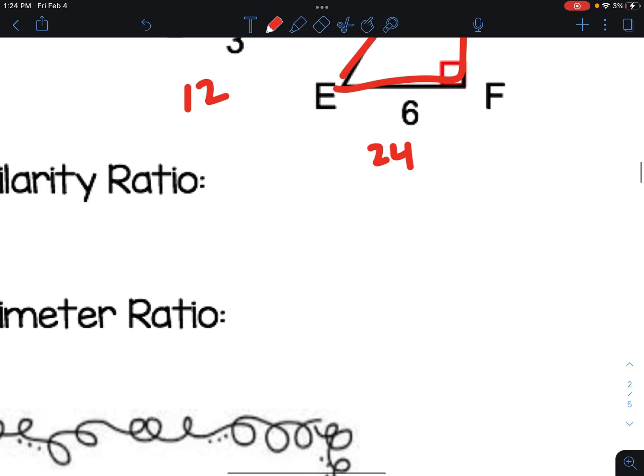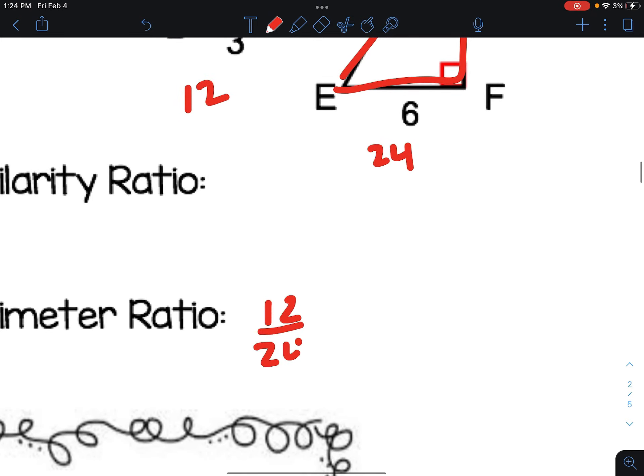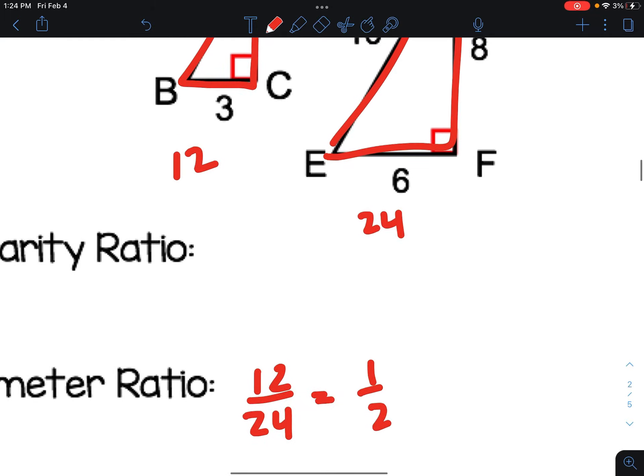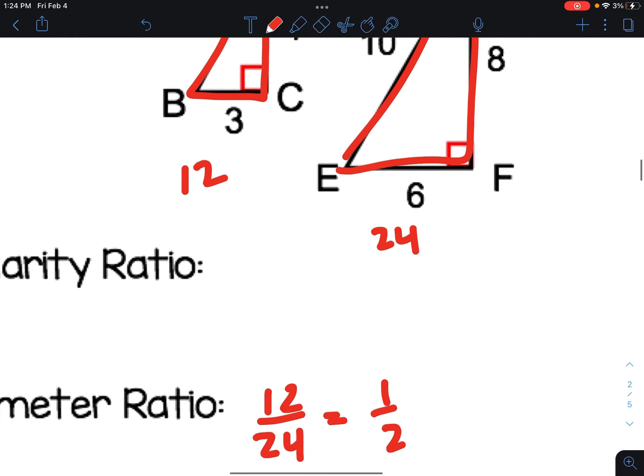And we can see that the perimeter ratio is 12 to 24 or 1 to 2, or you could say 2 to 1 depending on if you want to put the bigger one on top or not. Well, how does that compare to the similarity ratio?